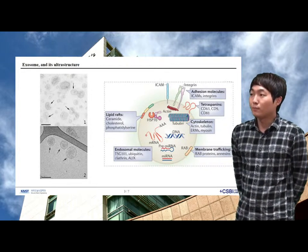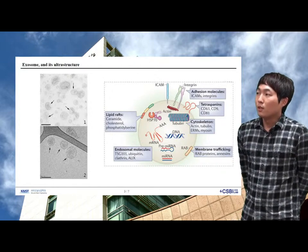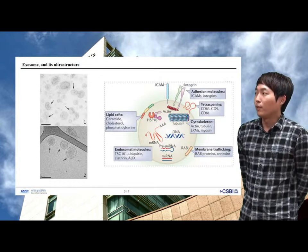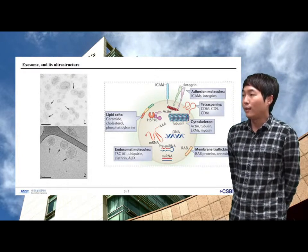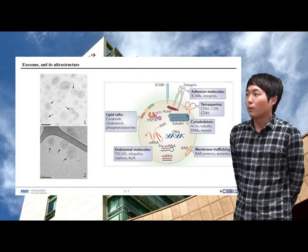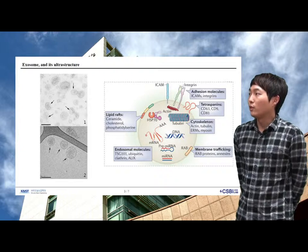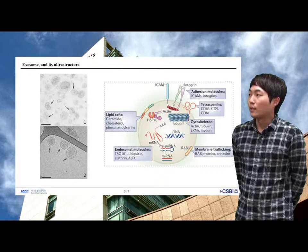All exosomes contain proteins involved in membrane transport and fusion, such as Rab proteins and annexin, cytoskeletal proteins, adhesion molecules, and tetraspanins, as well as RNA.